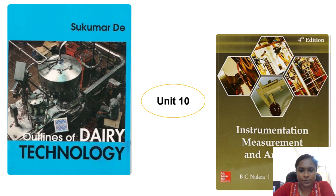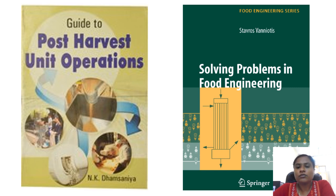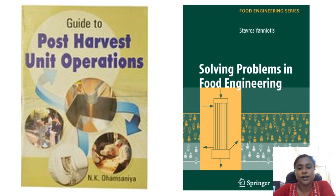For five-mark and ten-mark numerical questions in the mains examination, you can cover numericals from Sahai and Singh's book, Chakravarti's book, and 'Principles of Agricultural Engineering Volume 1'. You can also refer to 'Guide to Post Harvest Unit Operations' by Dhamsania, where previous year questions and both theory and numerical solutions are discussed. Another book is a Springer publication 'Solving Problems in Food Engineering', though simple numericals from the above books should suffice.